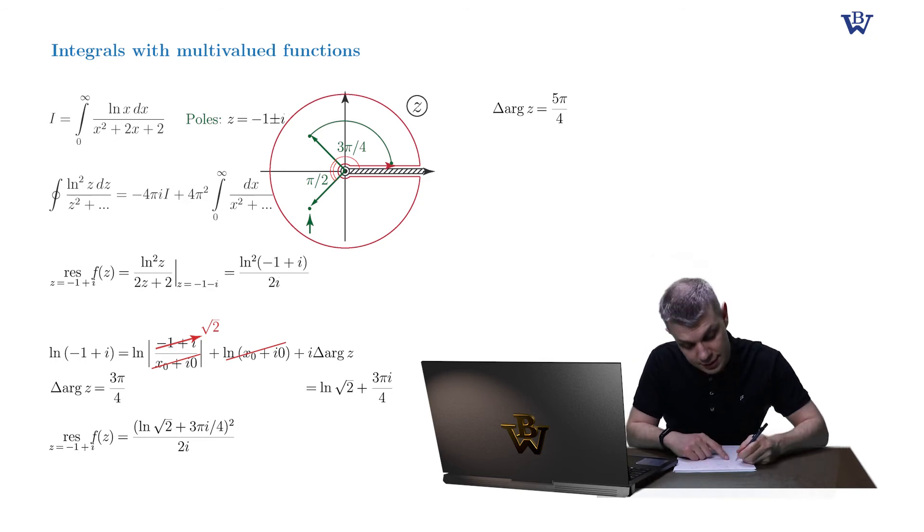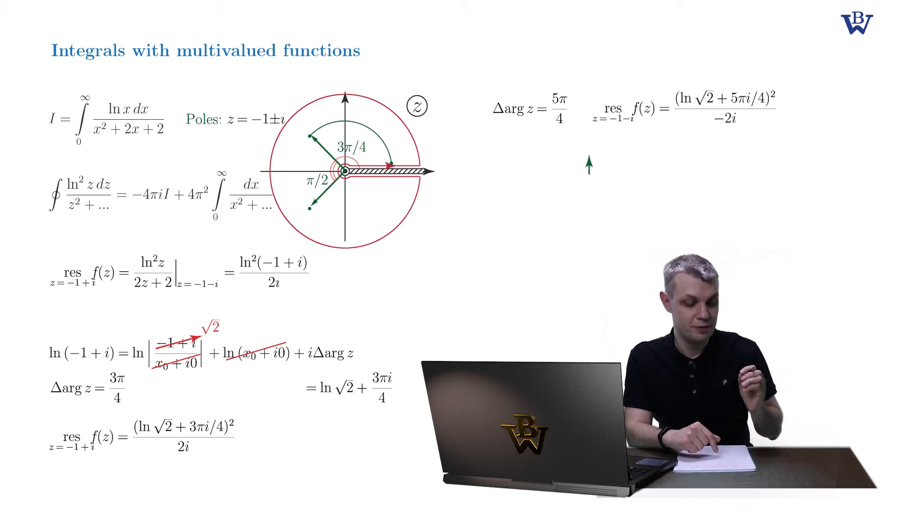And as the result, the residue of our function at point z equals minus 1 minus i is equal to logarithm of square root of 2 plus 5 pi i by 4 squared divided by 2 i minus. Notice the flip of sign in front of the fraction. Well, I'll leave it up to you to figure out why it's there.